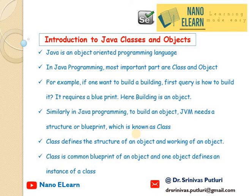For example, if one wants to build a building, the first query is how to build it — that is, it requires a blueprint to build it. Here, the building is treated as an object. Similarly, in Java programming, to build an object, the JVM needs a structure or blueprint, which is known as a class.